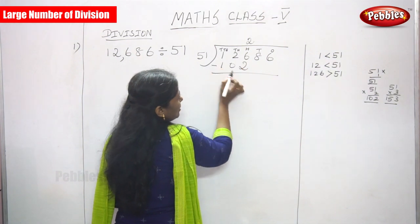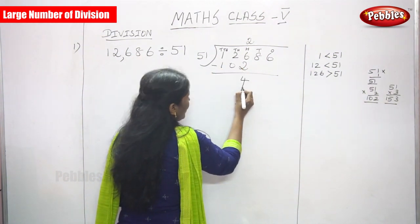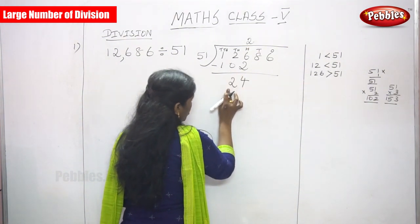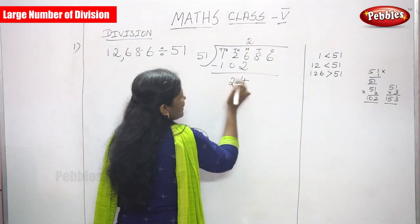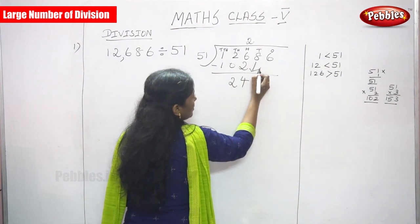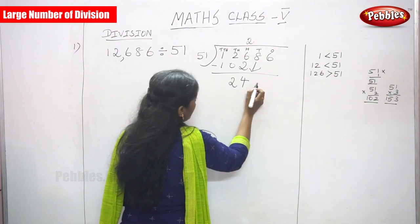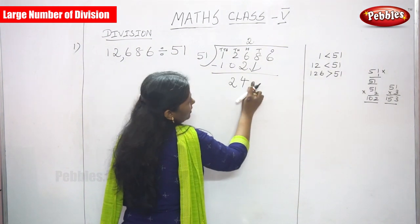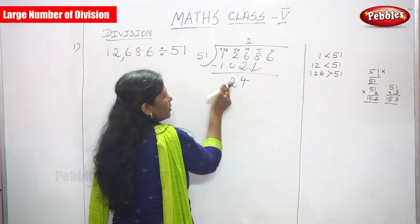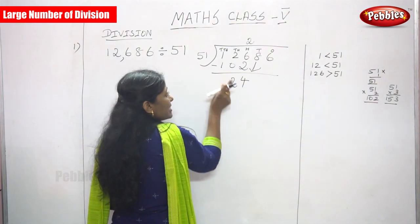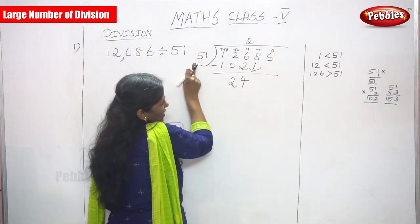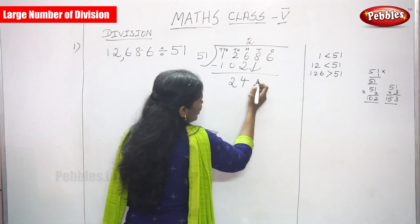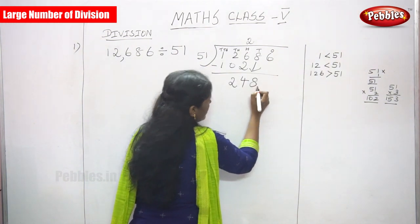Now subtract: 6 minus 2 is 4, and 2 minus 2 is 0, and 1 minus 1 is 0. So the remainder at this stage is 24. Before you bring down the next digit, compare the current remainder with the divisor. 24 is less than 51, so bring down the next digit, which is 8.